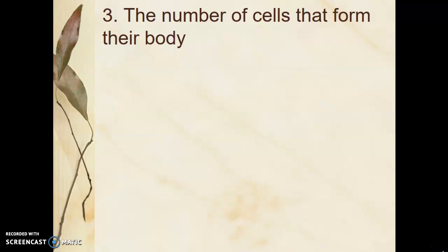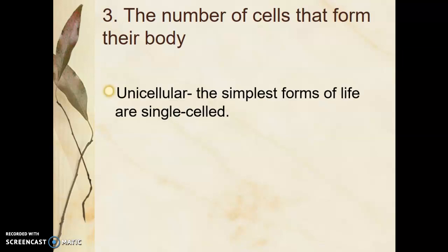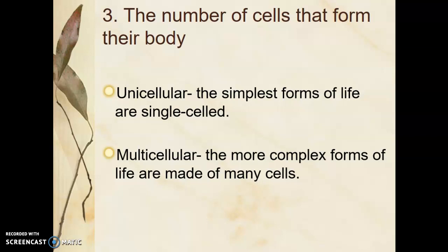The third and final criteria used to determine an organism's kingdom would be the number of cells in their body. Unicellular organisms are the simplest life forms, and their entire body is made up of just one cell. Multicellular organisms are more complex, and their body is made of many cells.